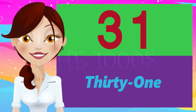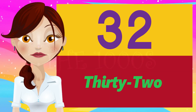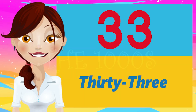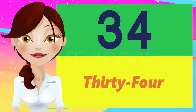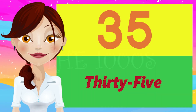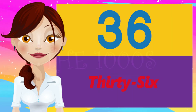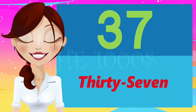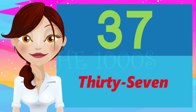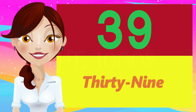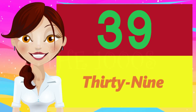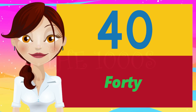Thirty-one (T-H-I-R-T-Y-O-N-E) 31. Thirty-two (T-H-I-R-T-Y-T-W-O) 32. Thirty-three (T-H-I-R-T-Y-T-H-R-E-E) 33. Thirty-four (T-H-I-R-T-Y-F-O-U-R) 34. Thirty-five (T-H-I-R-T-Y-F-I-V-E) 35. Thirty-six (T-H-I-R-T-Y-S-I-X) 36. Thirty-seven (T-H-I-R-T-Y-S-E-V-E-N) 37. Thirty-eight (T-H-I-R-T-Y-E-I-G-H-T) 38. Thirty-nine (T-H-I-R-T-Y-N-I-N-E) 39. Forty (F-O-R-T-Y) 40.